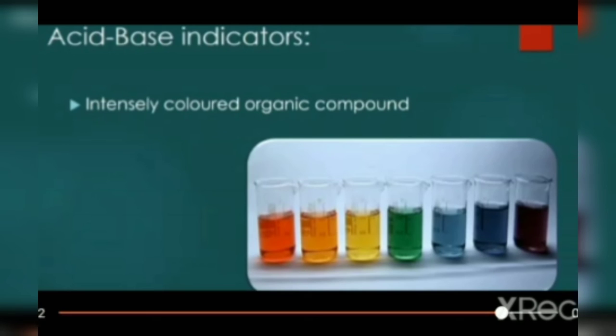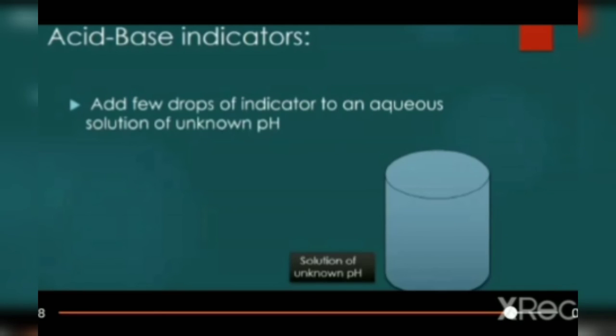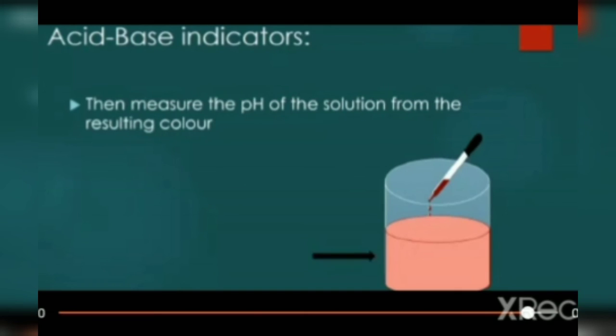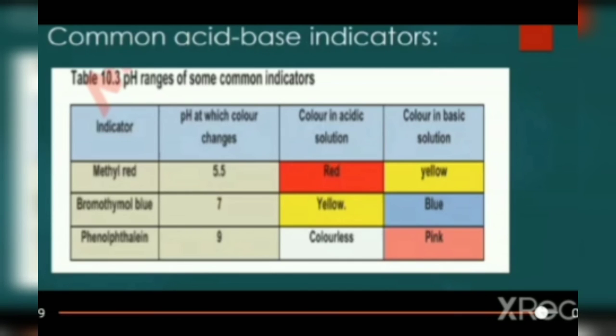Acid-base indicators are intensely colored organic compounds. They are different chemicals. How they work? We will add few drops of indicator to given aqueous solution of unknown pH. If color turns pink, the given indicator is phenolphthalein.